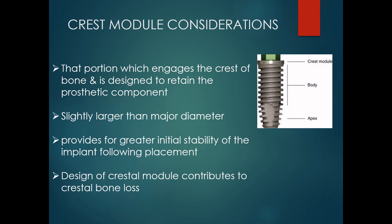Next, coming to the crest module considerations. The crest module, already discussed in detail in our implant macro geometry session, is the portion which engages the crest of the bone and is designed to retain the prosthetic component. The diameter of the crest module should be slightly larger than the major diameter of the implant body in order to reduce stress on the cortical bone. The crest module should seat fully over the implant body, providing a deterrent for the ingress of bacteria or fibrous tissue, and the seal created also provides for greater initial stability.